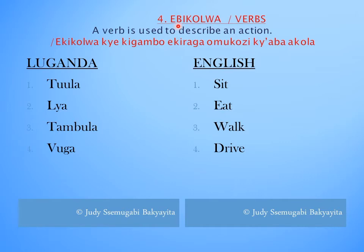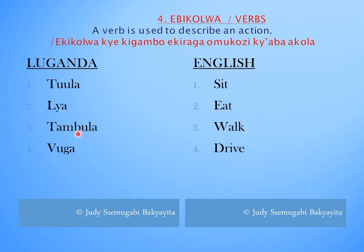The fourth part of speech is Ebikolwa, which is Verbs in English. A verb is used to describe an action. For example: tula — sit, leah — eat, tumblr — walk, vuga — drive. All these are verbs.